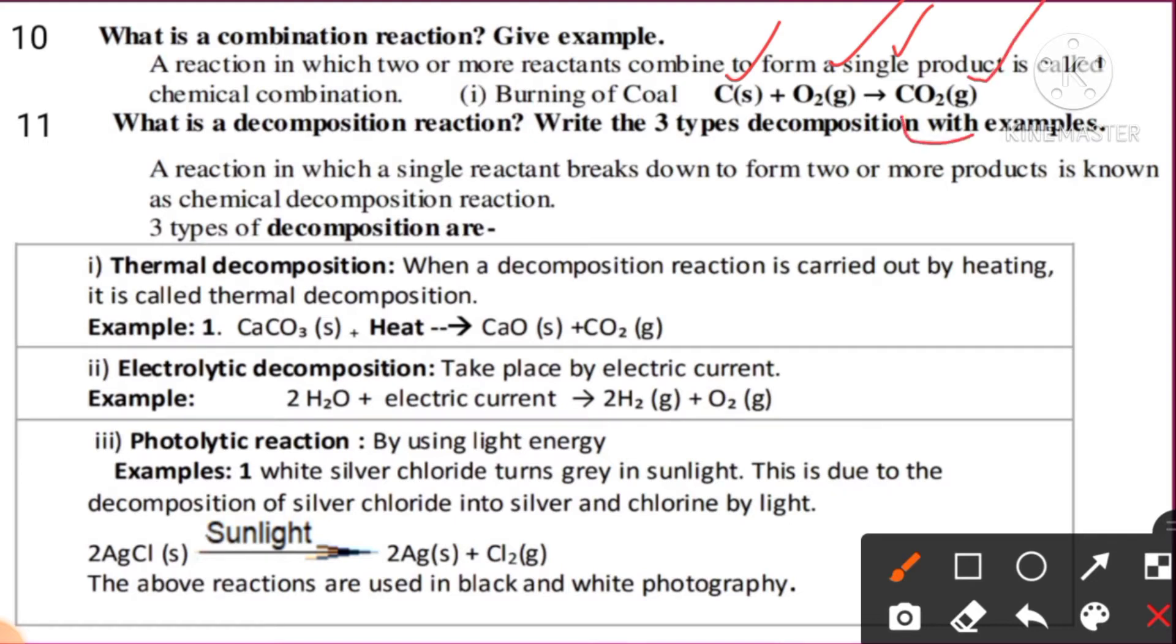Carbon and oxygen combine to give a single product called carbon dioxide gas. This is called a combination reaction. Question number 11: What is a decomposition reaction? Write the three types of decomposition with examples. This is a most important question and is asked many times.